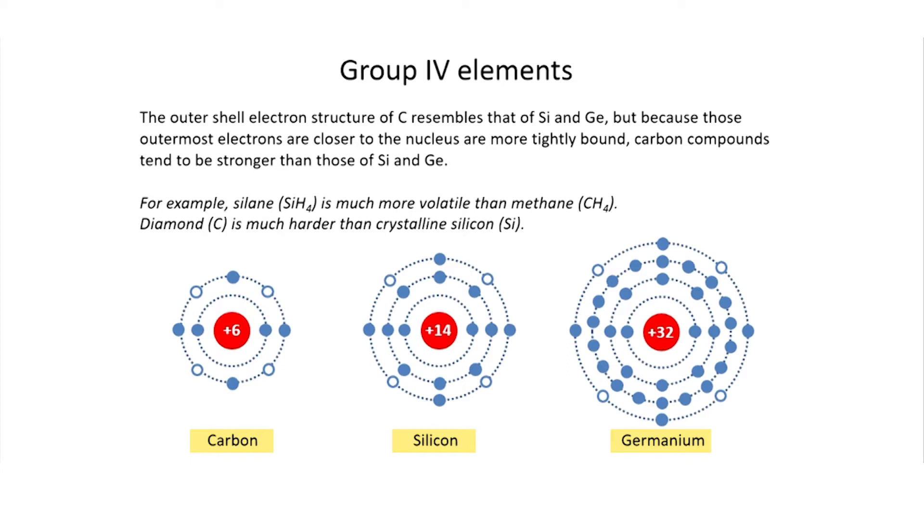There are four openings, or slots if you will, for electrons in the outermost shell. The only real difference between these atoms is the size, but their chemistries are very similar because it's the outermost electrons which interact with other atoms the most.